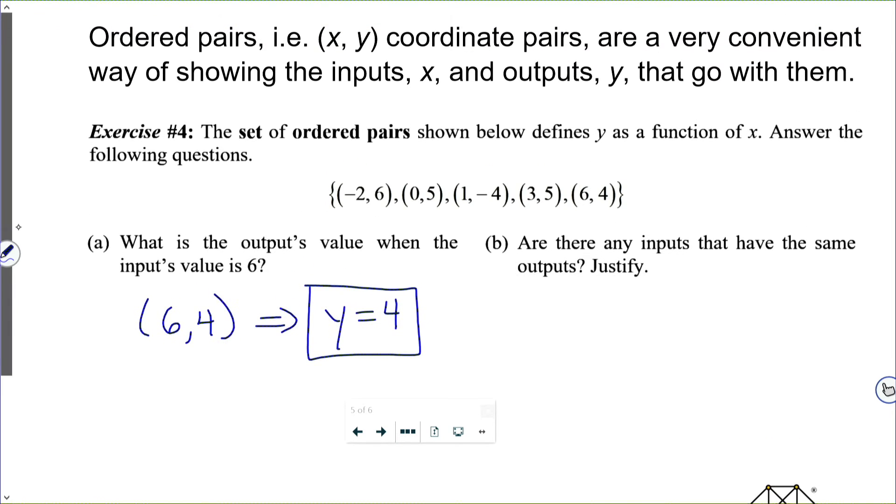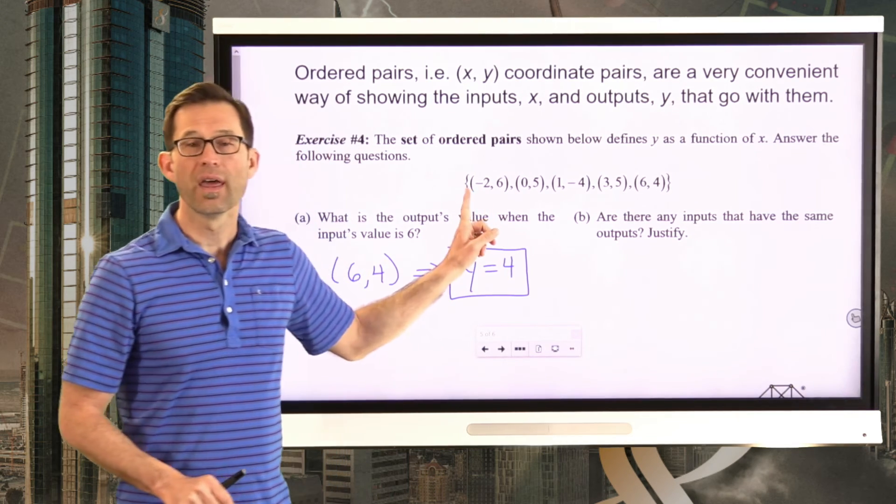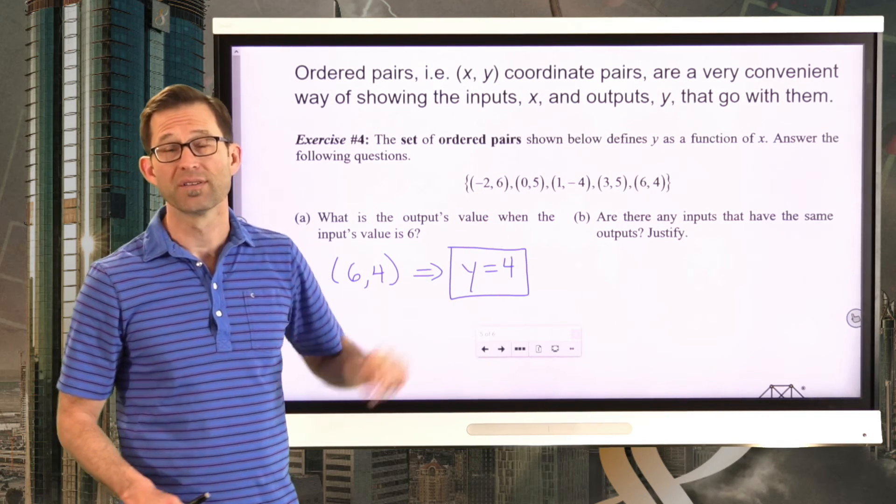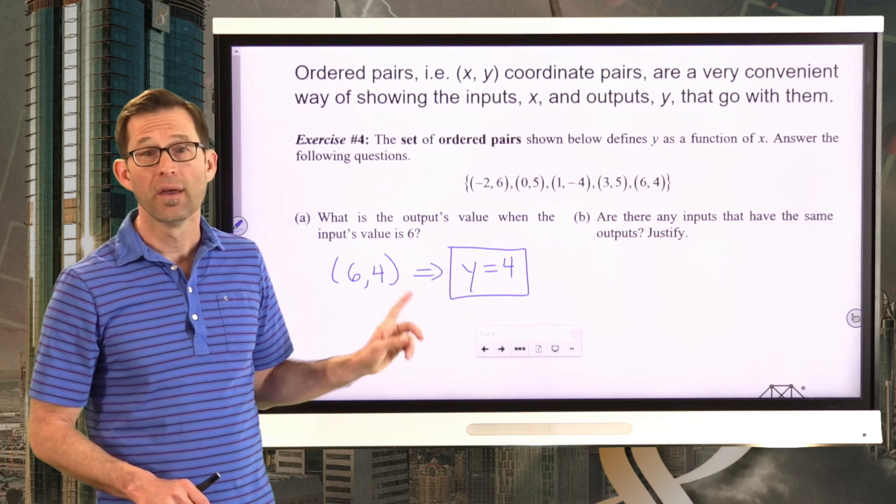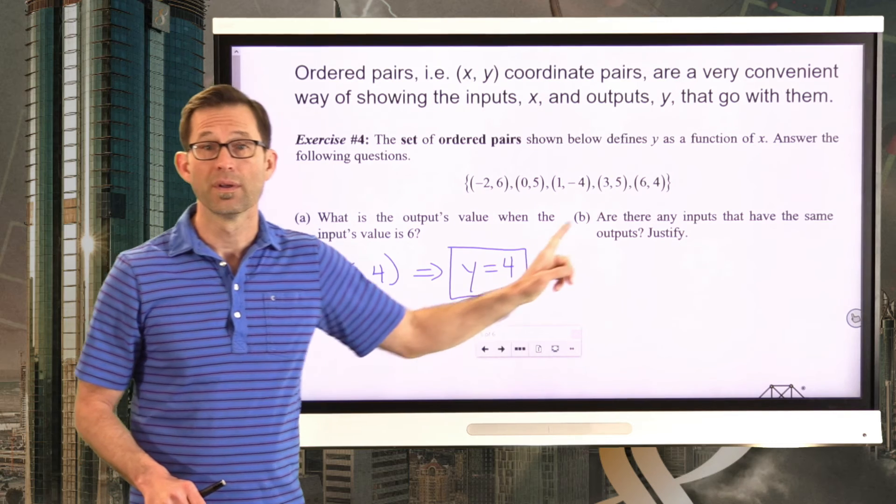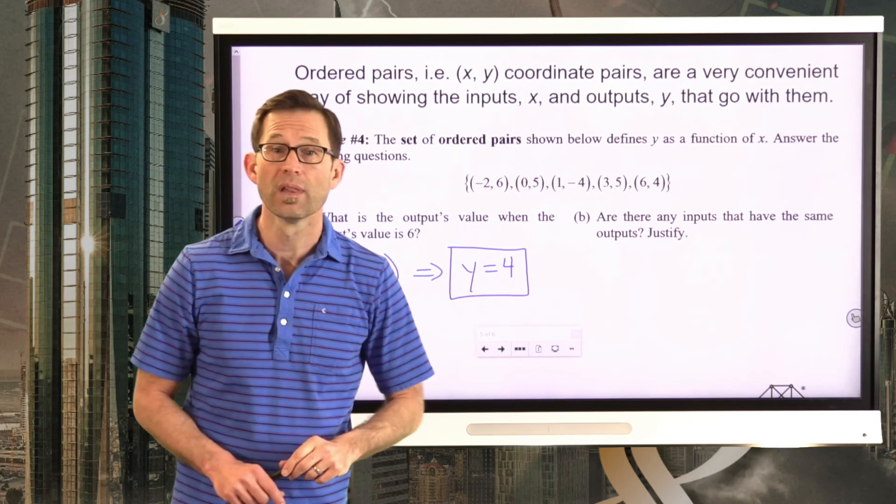All right, literally, this just tells me y equals 4 is the output. You see, this one, negative 2 comma 6, would tell us, oh, when the output is 6, the input is negative 2. But we're saying, if the input value is 6, then the output value is 4. All right, letter B. Are there any inputs that have the same output? Justify.